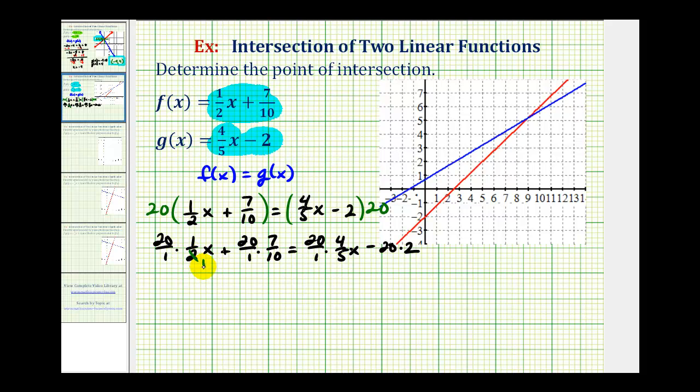The 2 simplifies to 1, the 20 simplifies to 10, so here we have 10x. Here the 10 simplifies to 1, the 20 simplifies to 2, so we have plus 14. Here the 5 simplifies to 1, and the 20 simplifies to 4. This will be 16x, and then here we have minus 40.